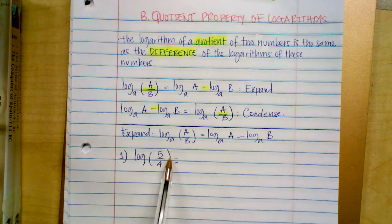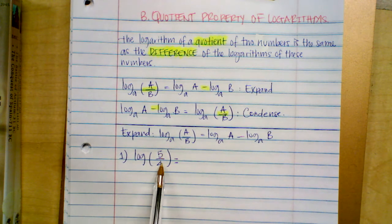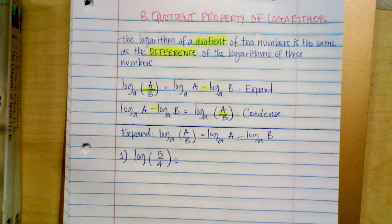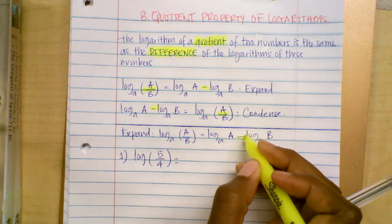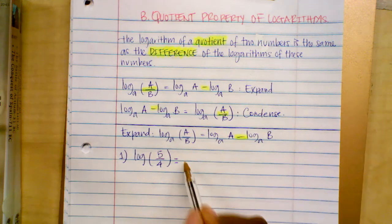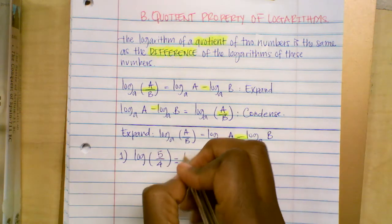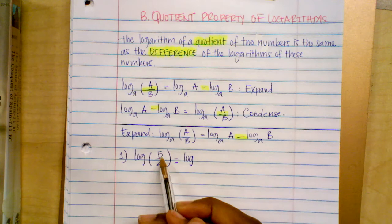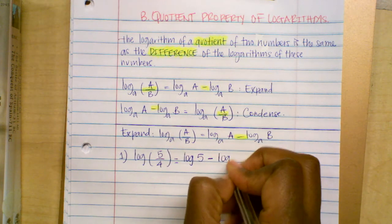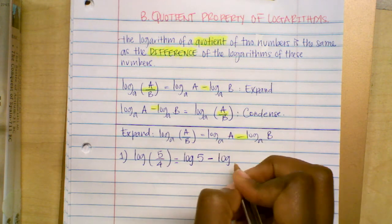For example, I have the common log of five over four. If you follow this formula, remember when you have a quotient, we can expand it as a subtraction — the subtraction of two logs. So this becomes the common log of five minus the common log of four.